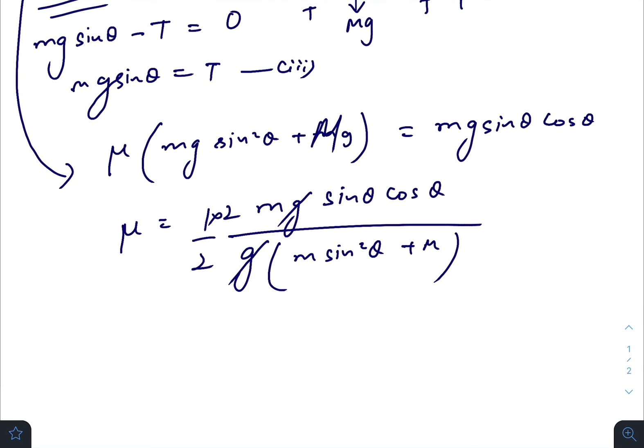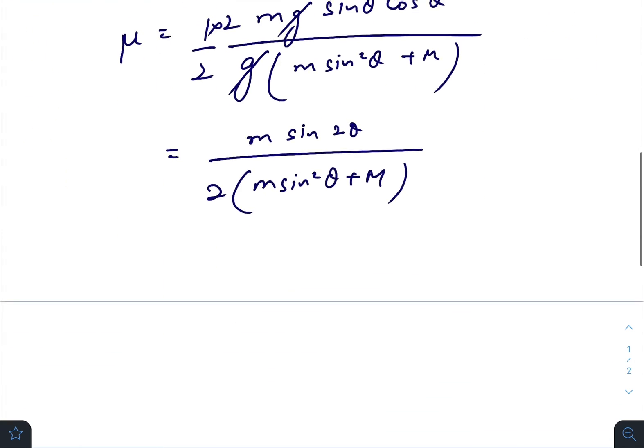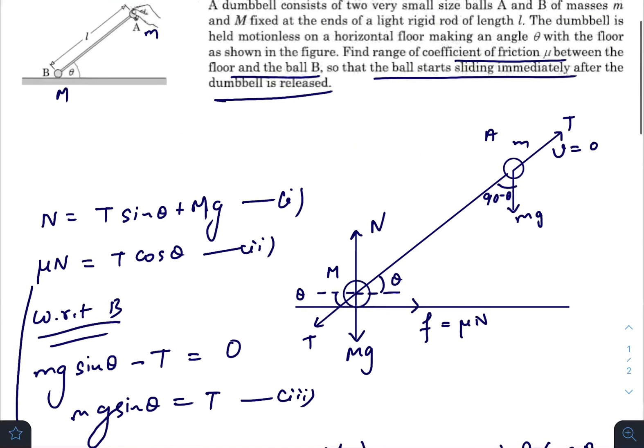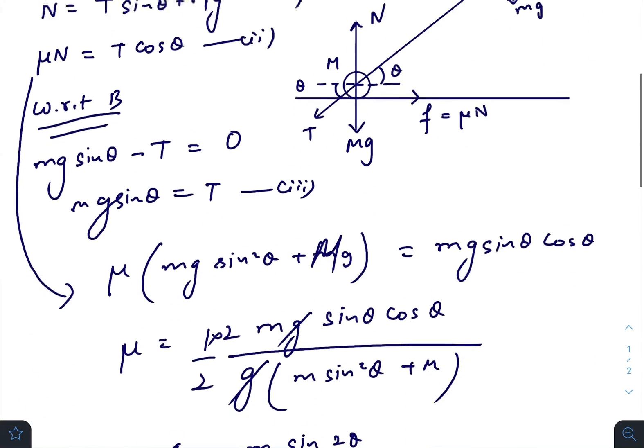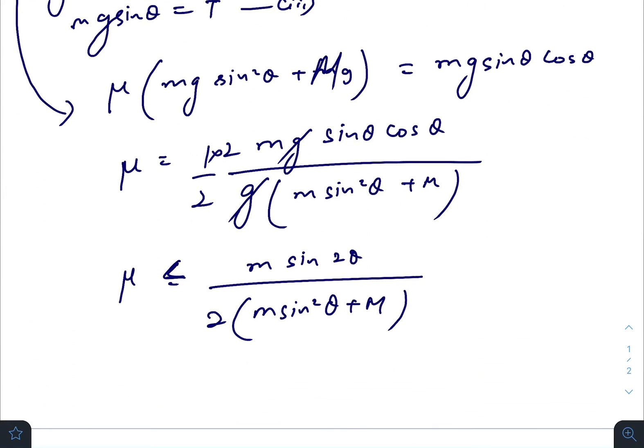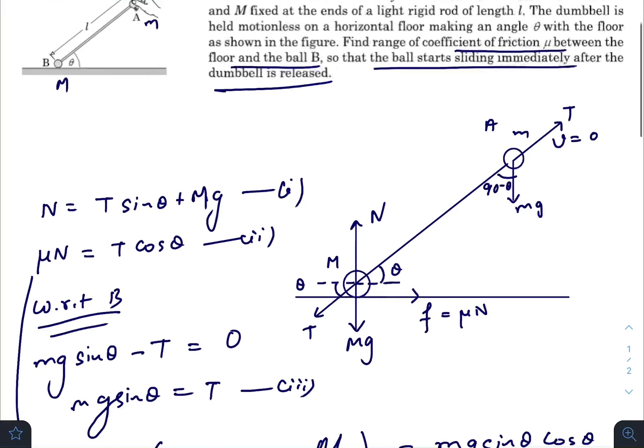The value of μ must be less than m sin θ cos θ divided by (m sin² θ + M). Basically, the value of μ must be less than this value. Then only, after releasing ball A, the ball B will start to slide on the floor.